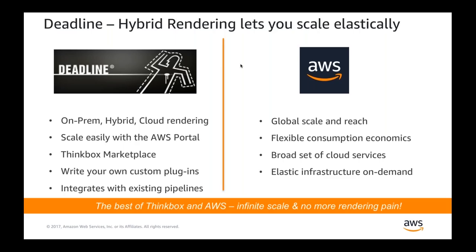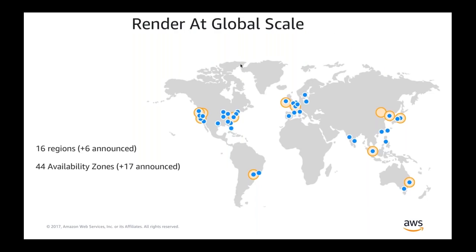We marry Deadline with AWS and take advantage of what a huge public cloud provider can deliver: global scale and reach, economies of scale, low-latency regions, flexible consumption economics. EC2 Spot gives you the dark cycles of compute time that are heavily discounted — the cheapest compute available — to burst elastically on demand. You can also take advantage of the broad set of cloud services Amazon constantly announces. The key thing is it's infinite scale, on-demand, and under your control — everything gets created inside your own AWS account.